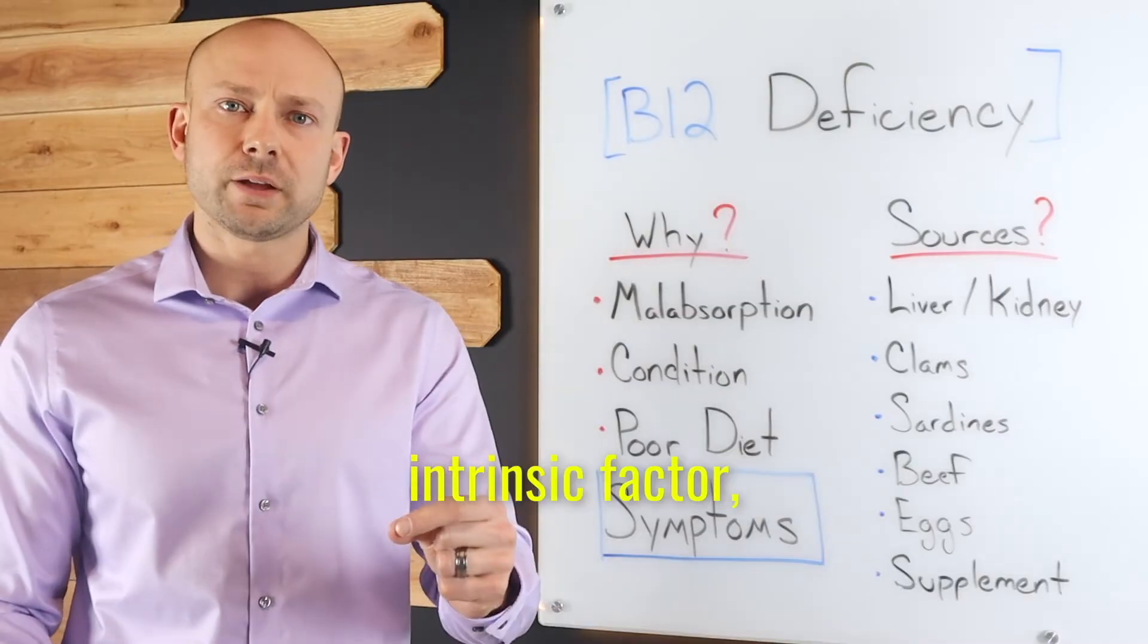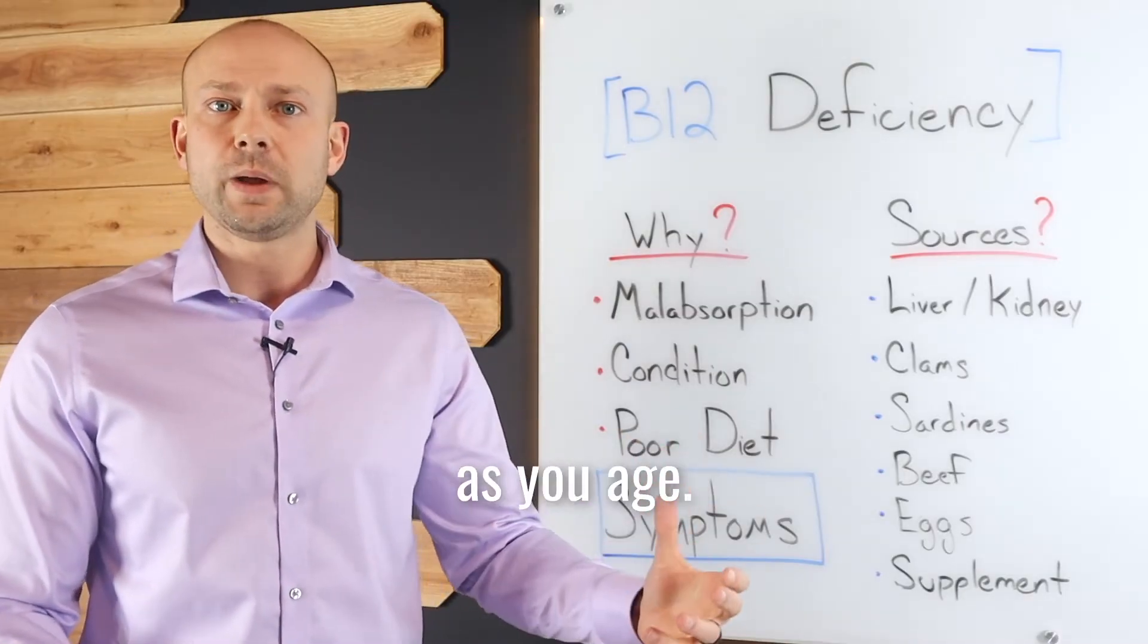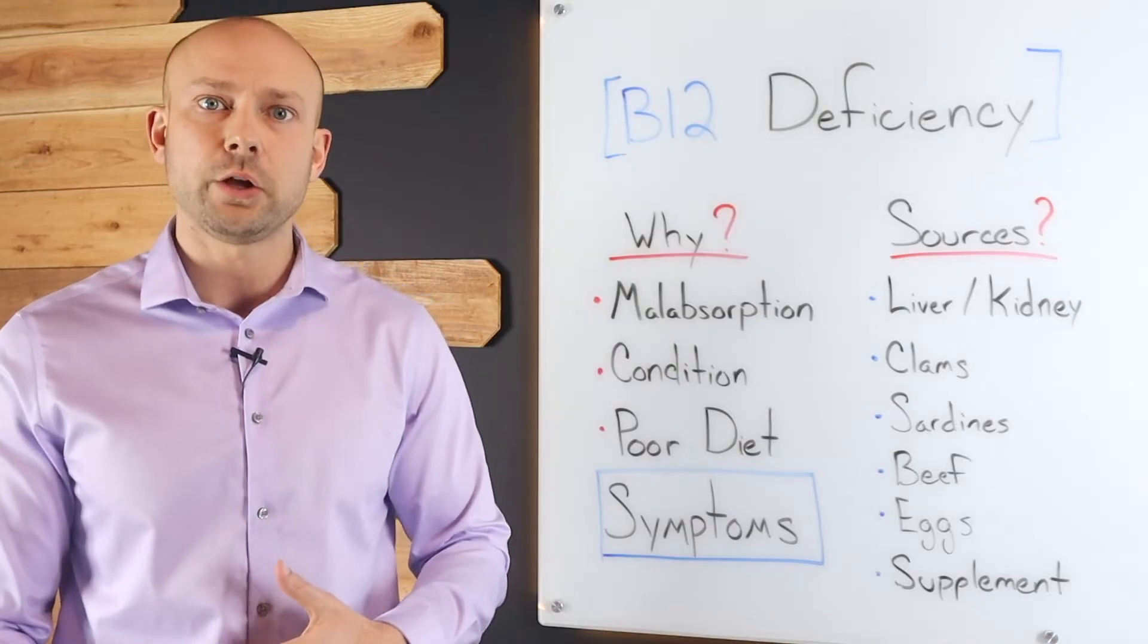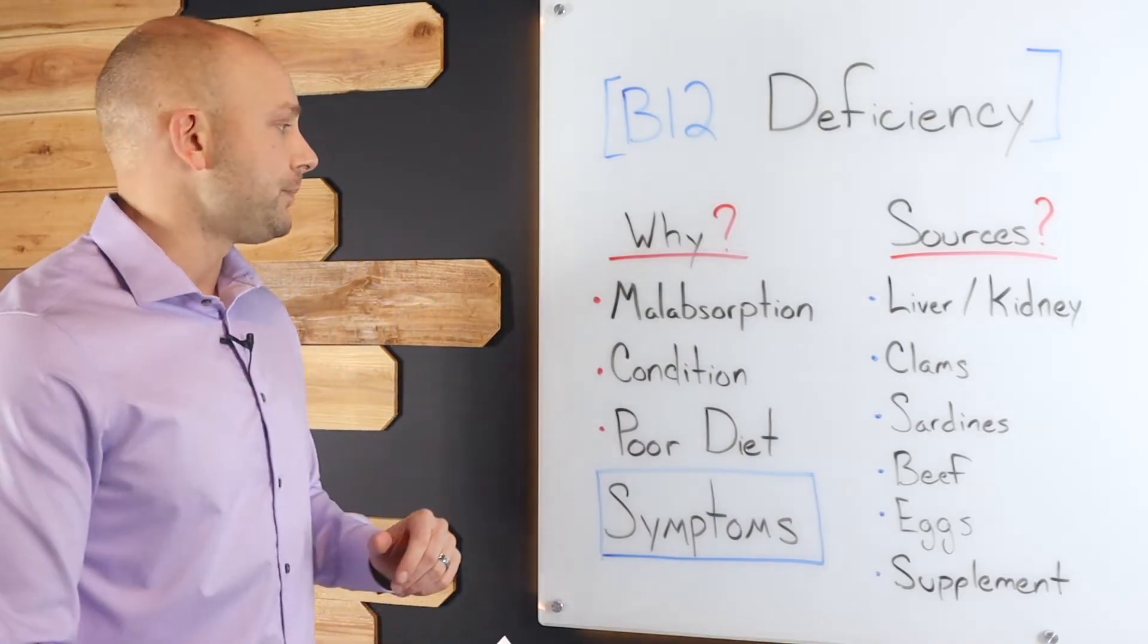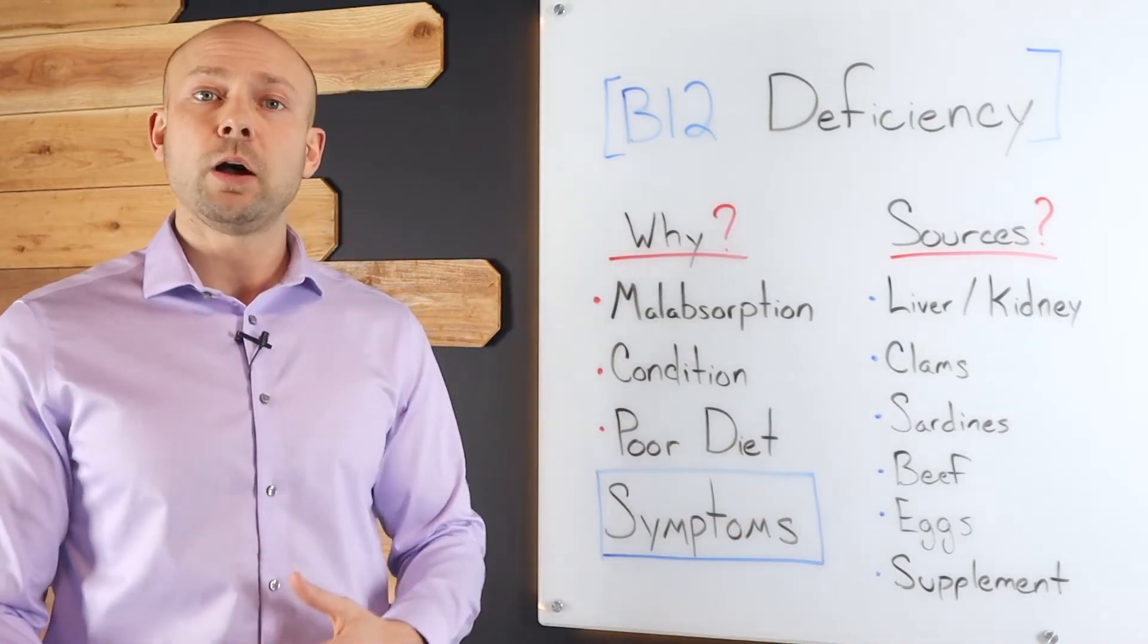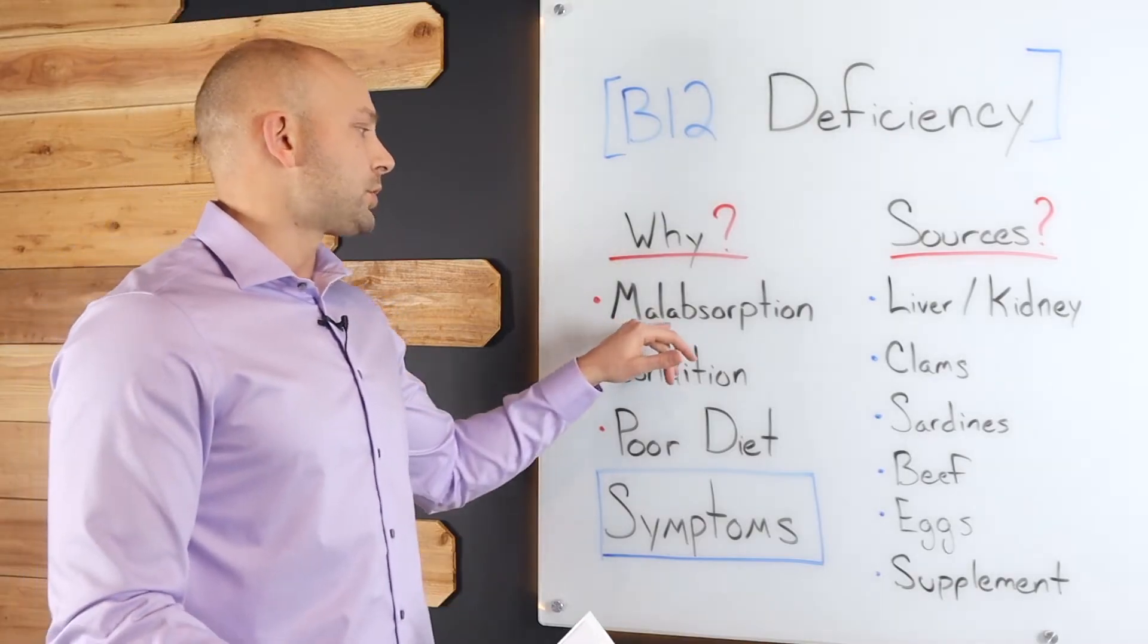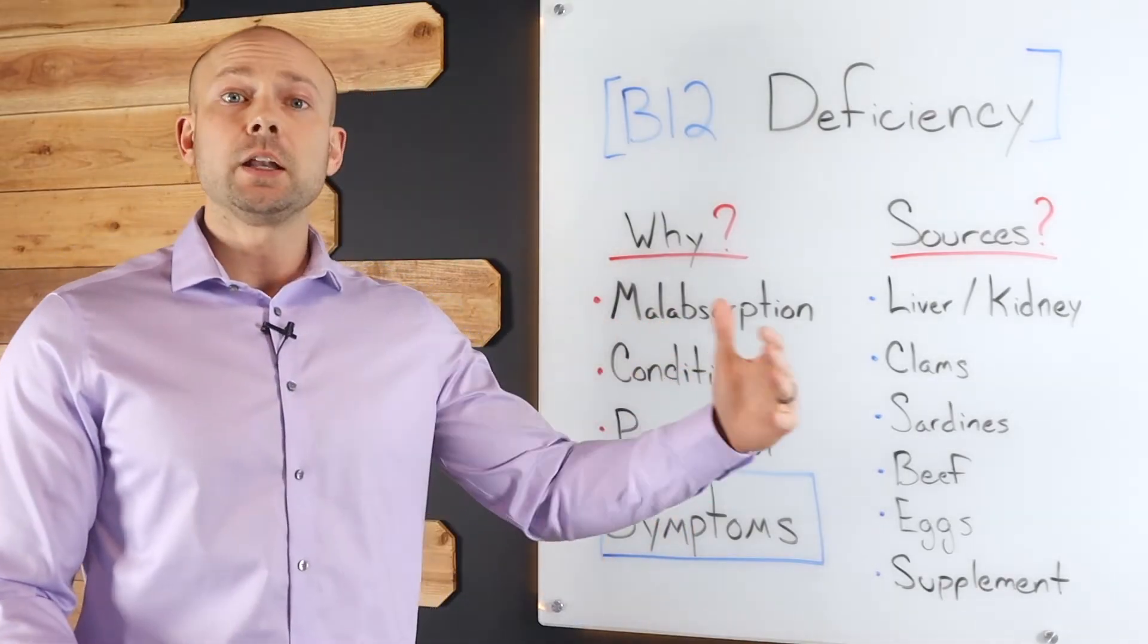You need something called intrinsic factor, which actually declines in your body as you age. It's a protein that's made by the parietal cells in your gut, and essentially without it, you can't absorb B12 properly. So malabsorption is a big one. Aging and gut issues are the typical major causes there.